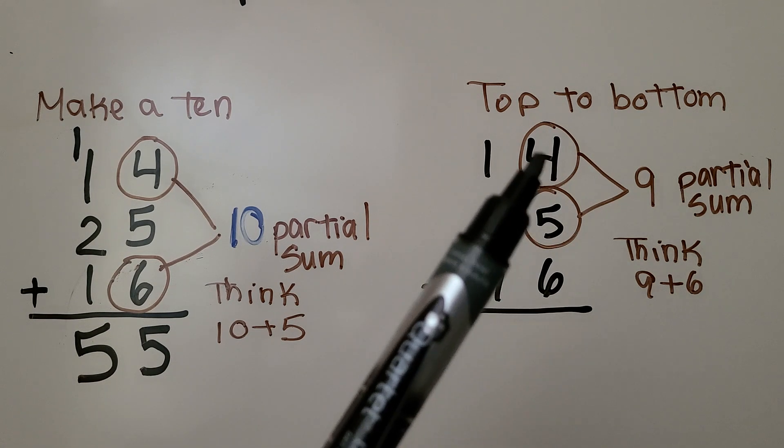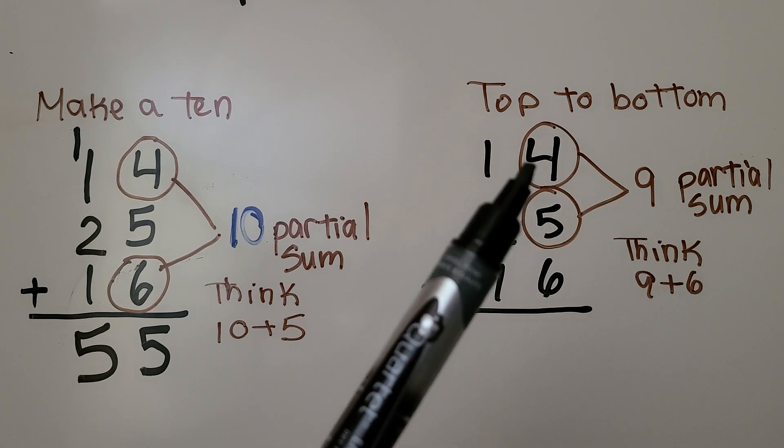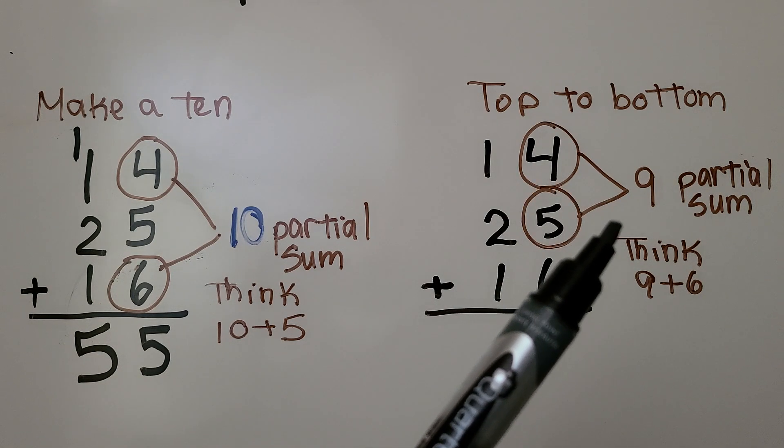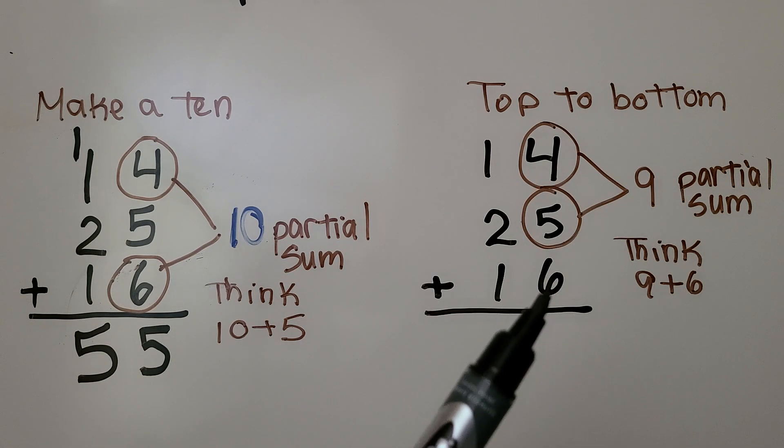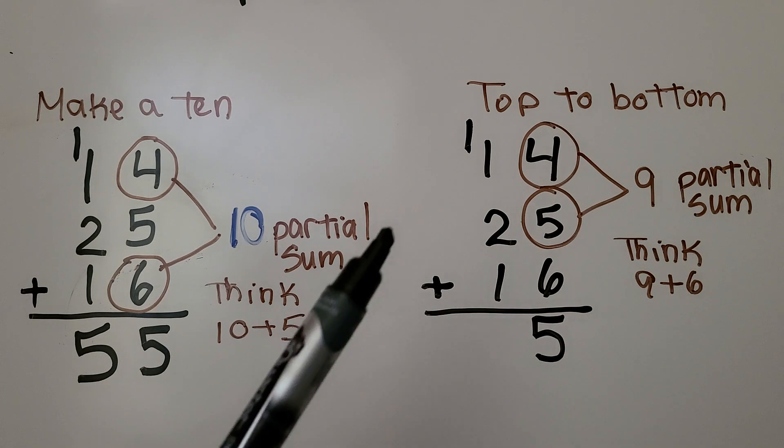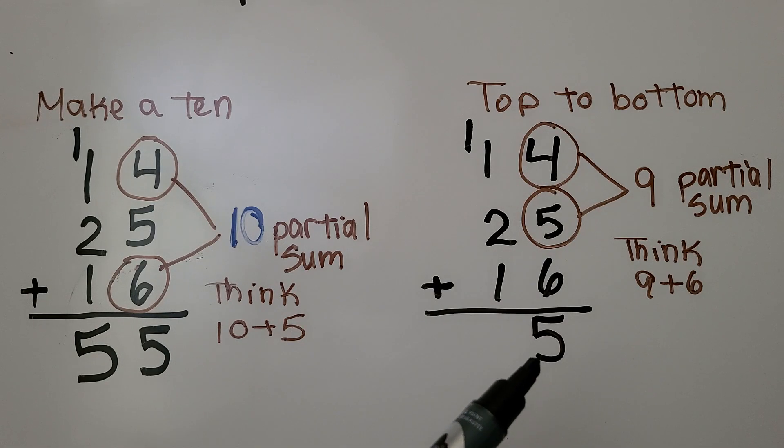We can also do it from top to bottom. We start by adding the 4 plus 5, which is 9. Then we do 9 plus 6, which is 15. We regroup the 10 and put the 5 in the ones place.